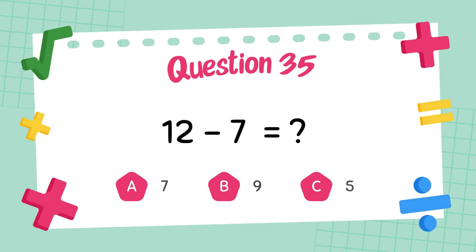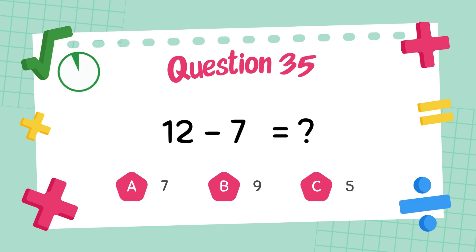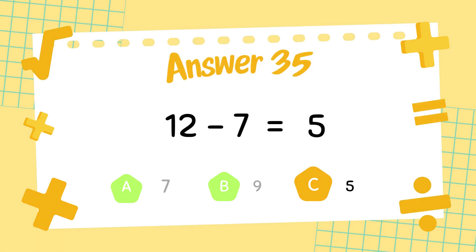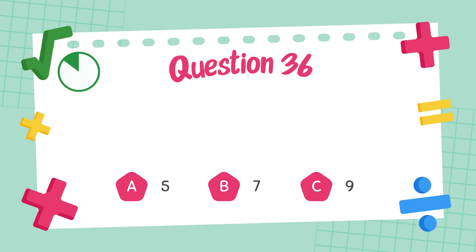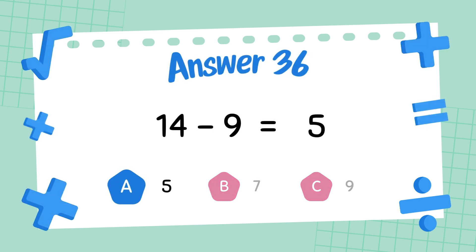What is 12 minus 7? The answer is 5. What is 14 minus 9? The answer is 5.